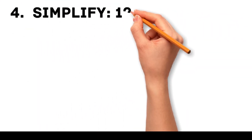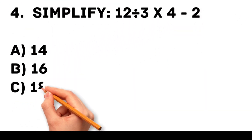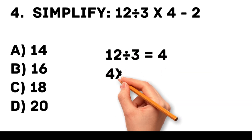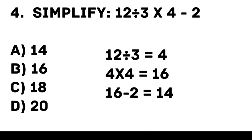Question 4. Simplify: 12 divided by 3 times 4 minus 2. A. 14. B. 16. C. 18. D. 20. Answer: A. 12 divided by 3 is 4. So, 4 times 4 is 16. Then 16 minus 2 is 14.